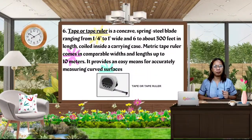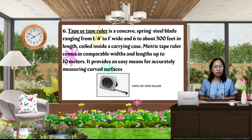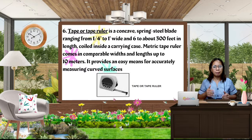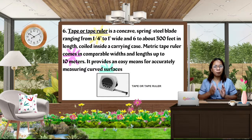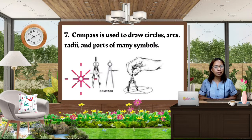We move on to the tape roller. It is a concave spring steel blade ranging from 1/4 inches to 1 inch wide and 6 to about 300 feet in length, coiled inside a carrying case. Metric tape roller comes in comparable width and lengths up to 10 meters. It provides an easy means for accurately measuring curved surfaces.